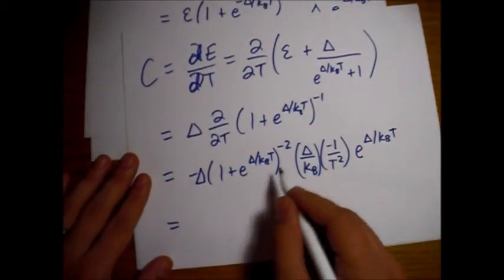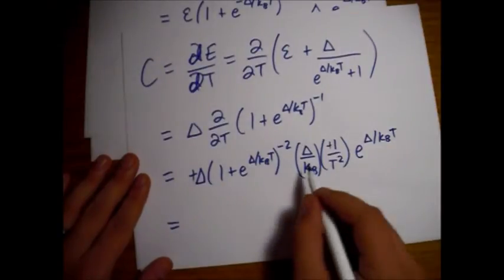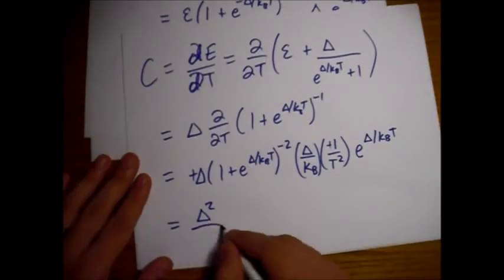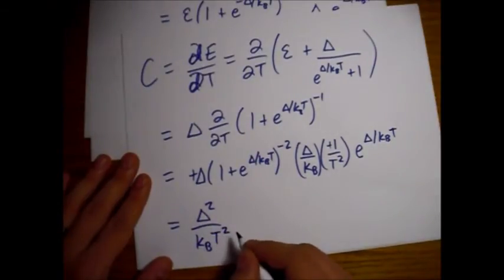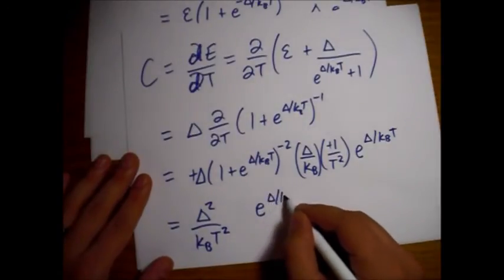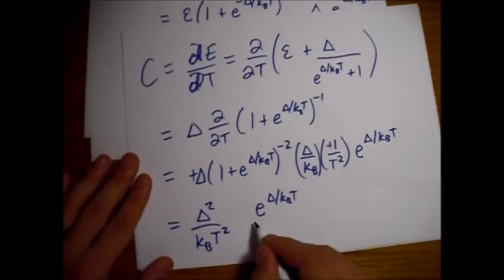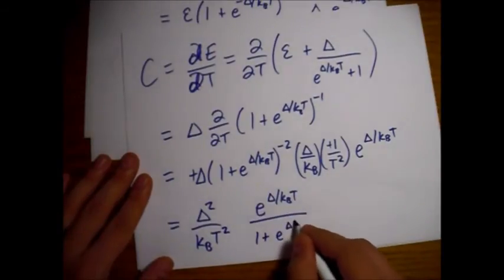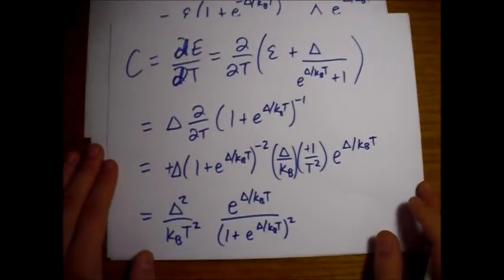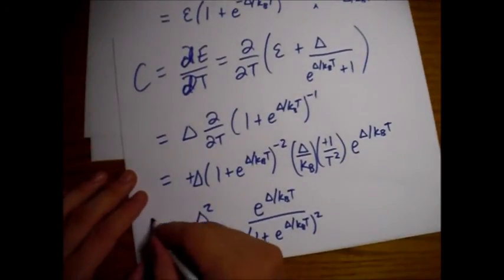So we've got these minus signs. We'll cancel out. We get a delta squared over kBT squared. And then we just have an e to the delta over kBT. And then a one plus e to the delta over kBT. Like this. And squared. So here is our heat capacity.